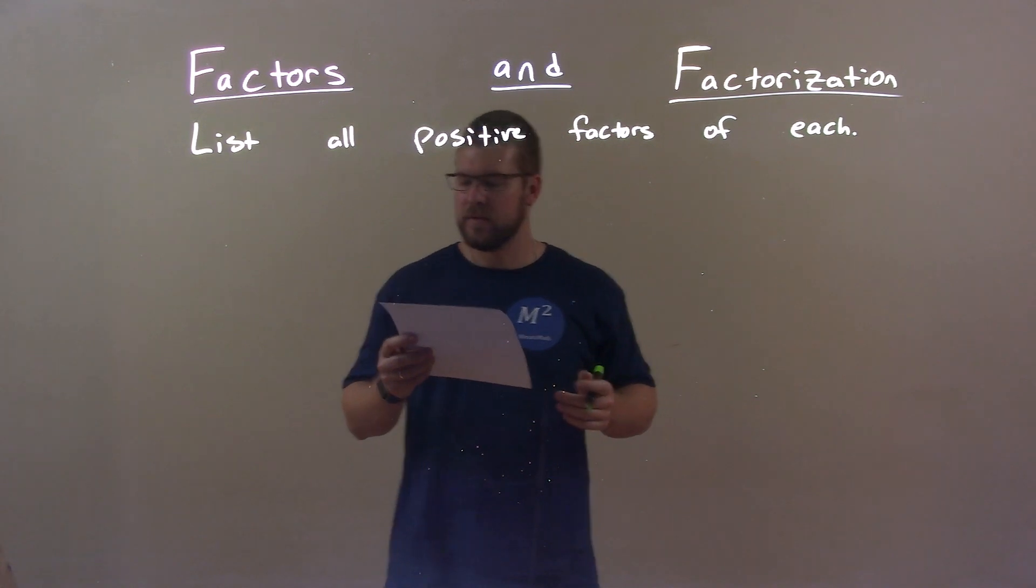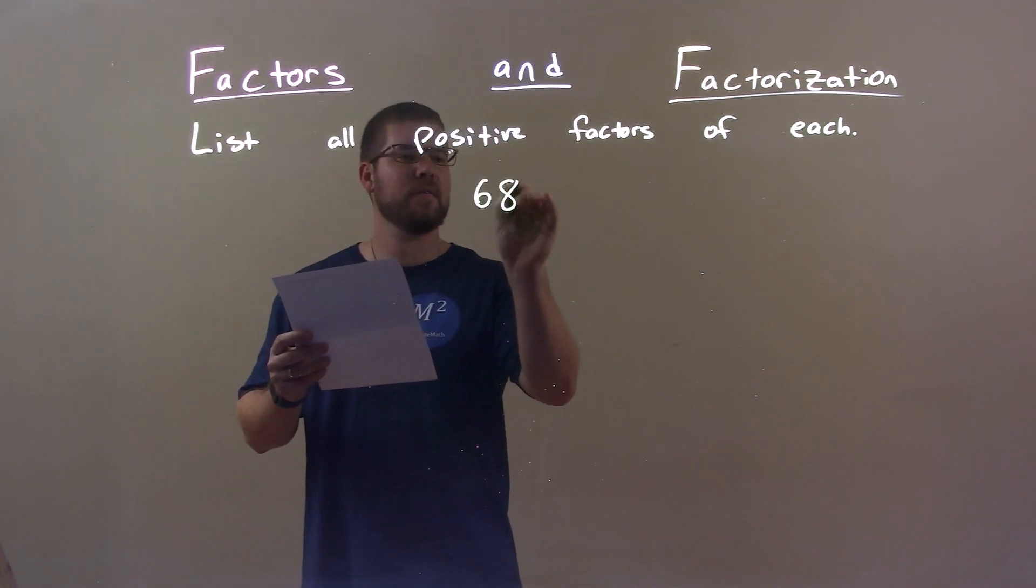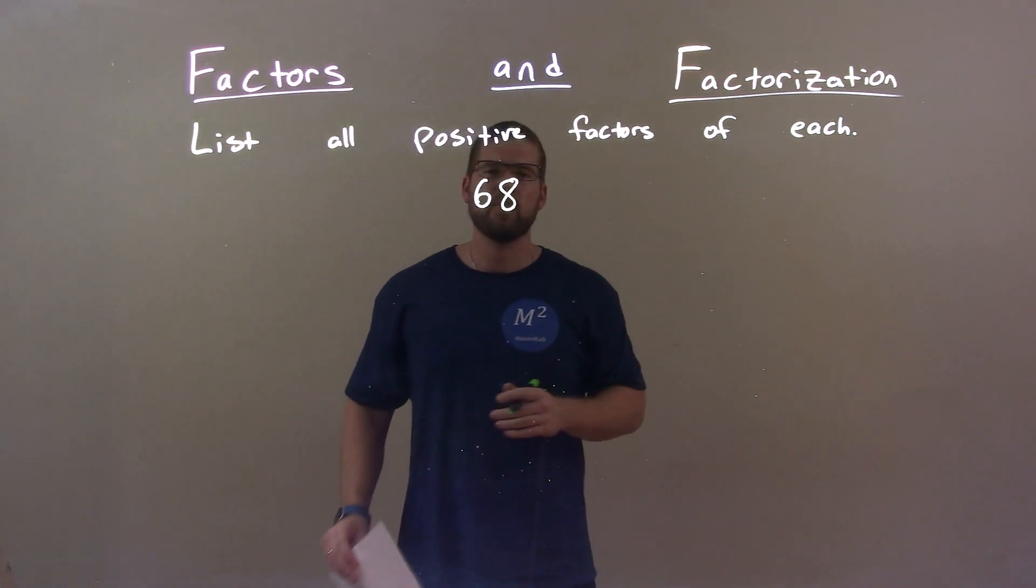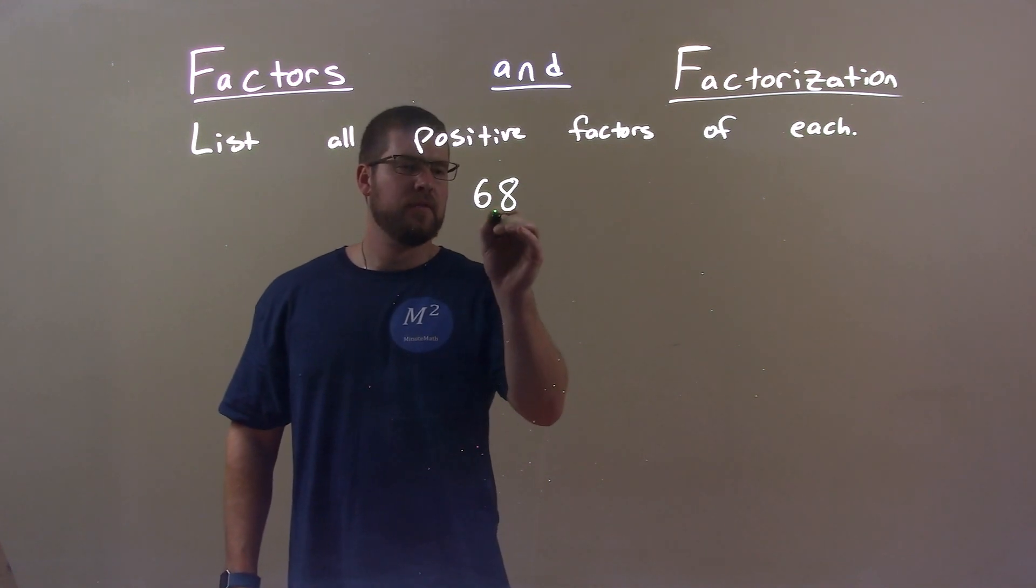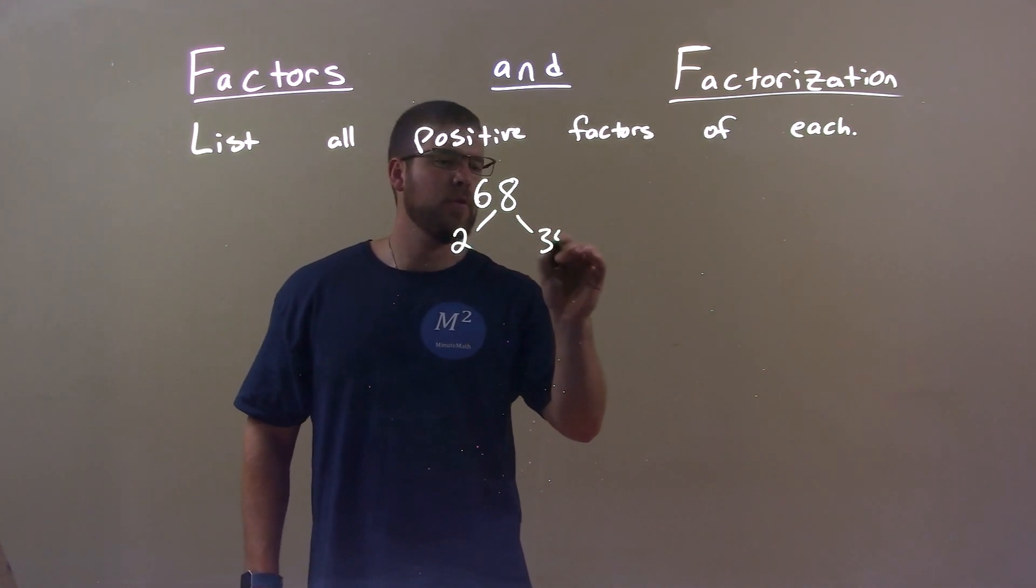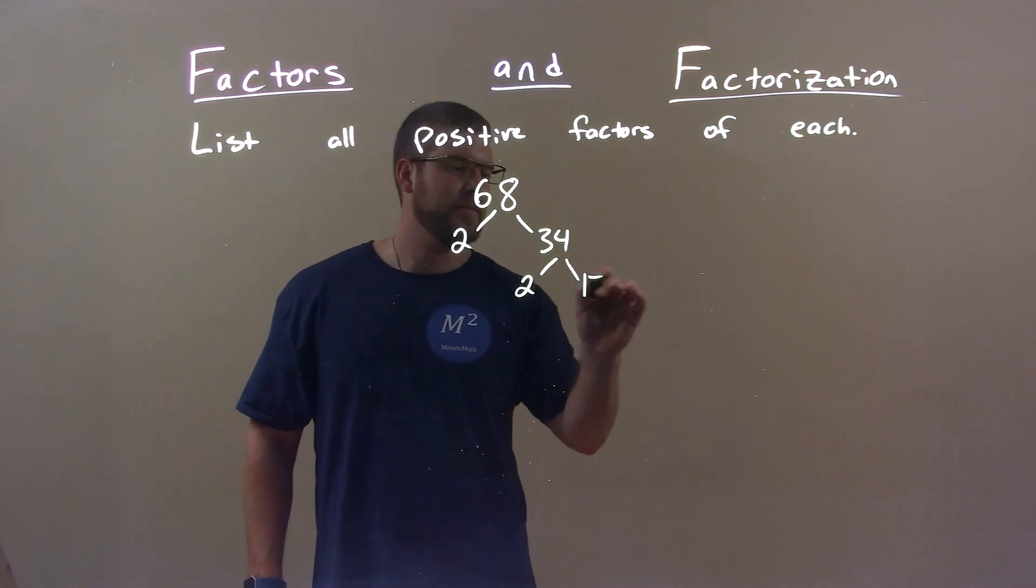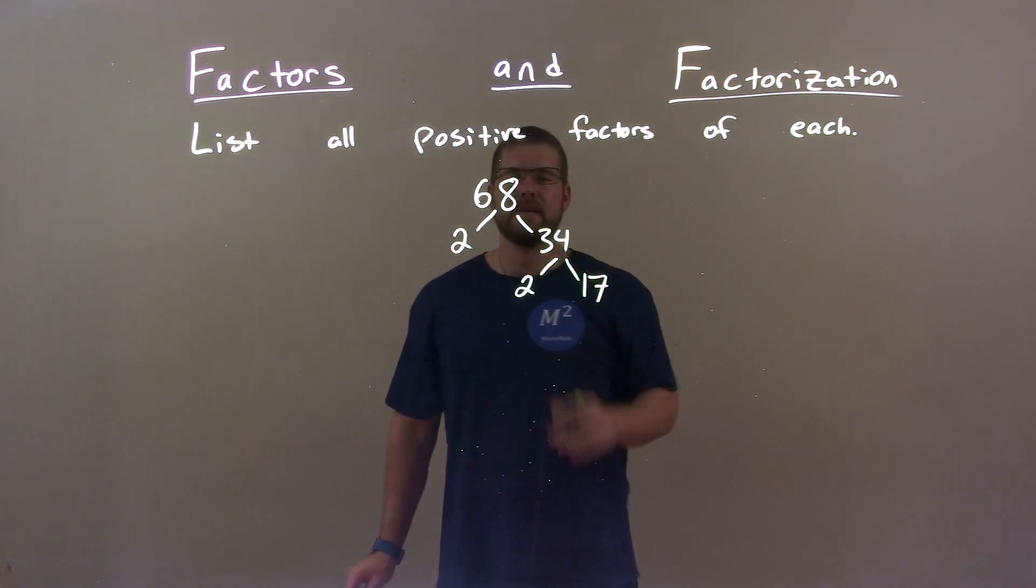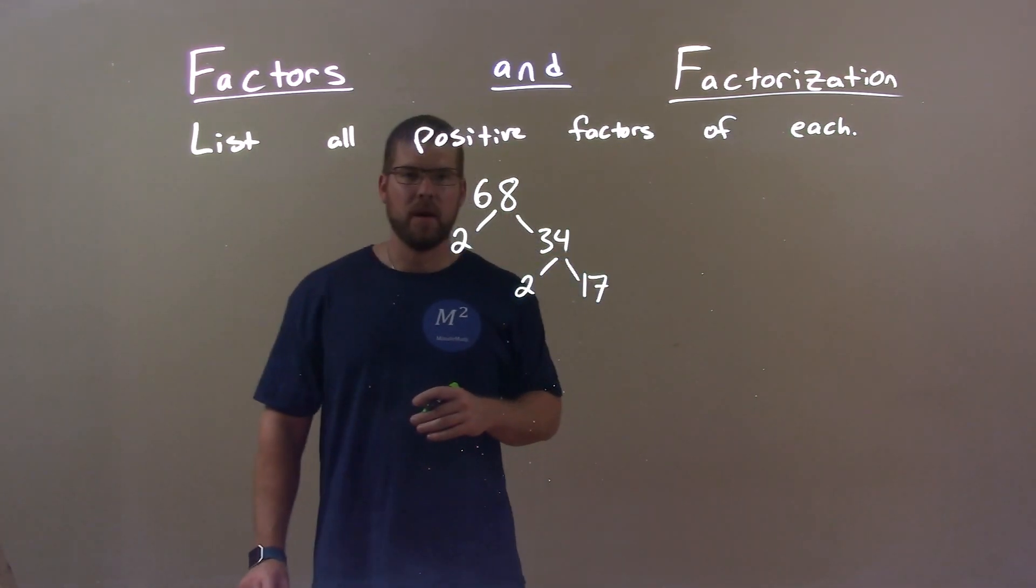If I was given this number, 68, okay? Well, let's break down 68 with prime factorization. That's 2 and 34, and 34 is 2 and 17. We've broken it down now to all the prime numbers.